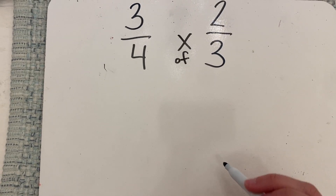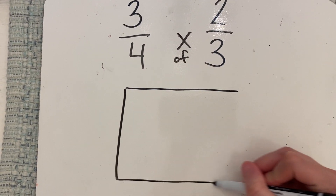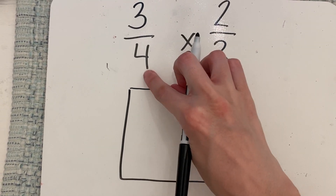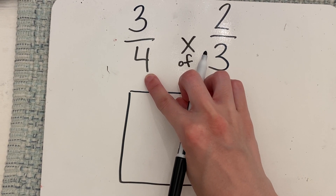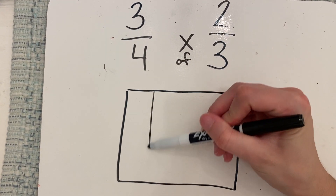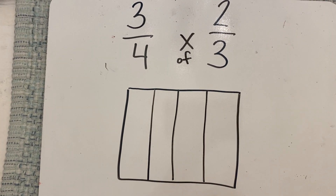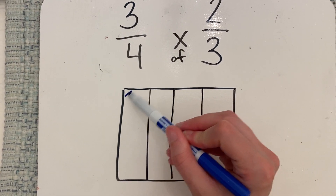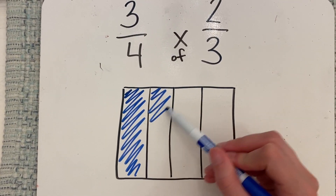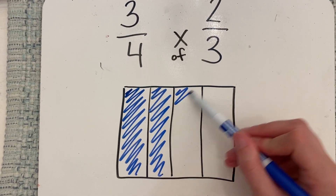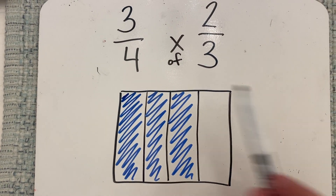So what we do to model this is we draw a box. I'm first going to only worry about this fraction. I'm going to split this into four pieces because I have four as my denominator — one, two, three, four. And then I'm going to shade in my fraction, so I have only three pieces. Three-fourths. So now I've modeled my first fraction.